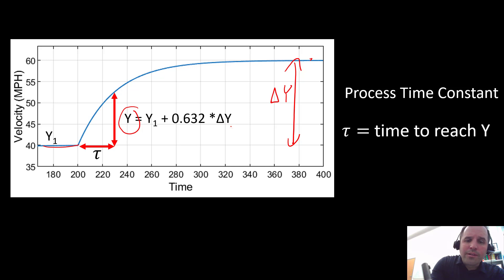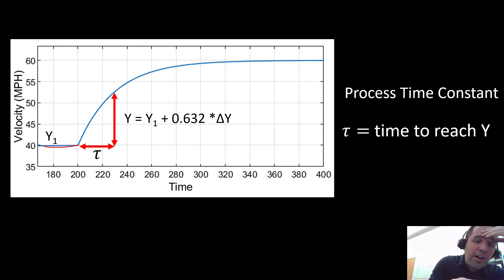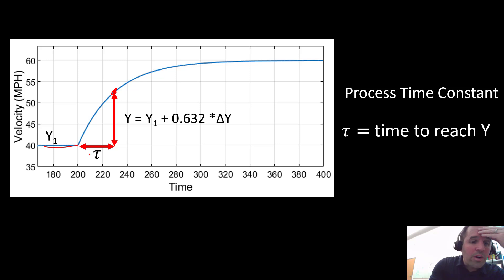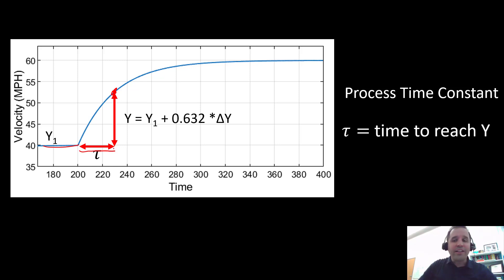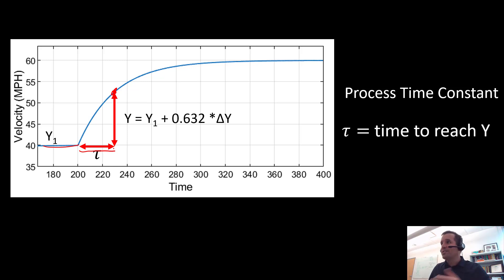You can do this in a spreadsheet or by hand calculation. The y value would be somewhere along the response curve, and tau is the time it takes to reach 0.632 of the new steady state.